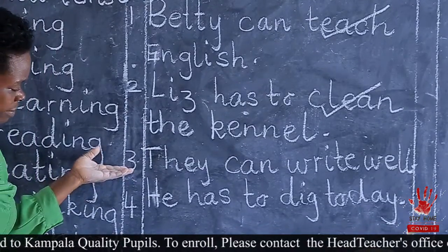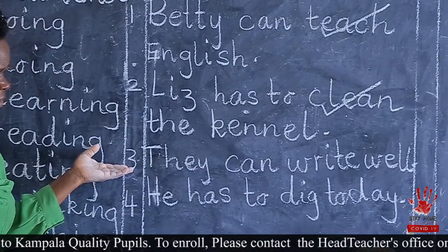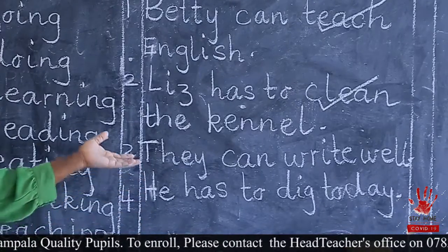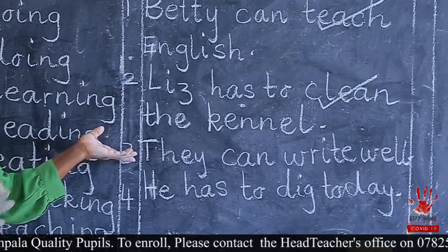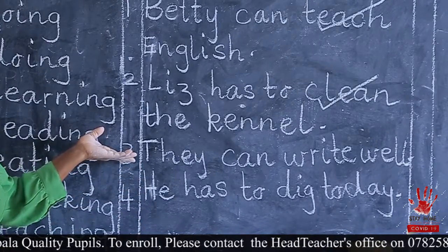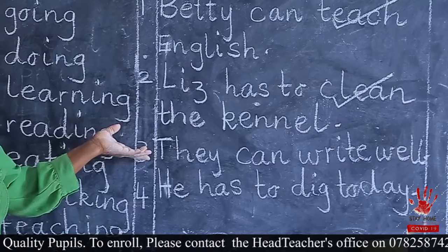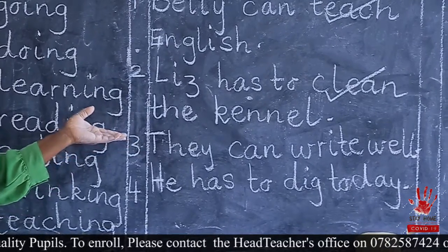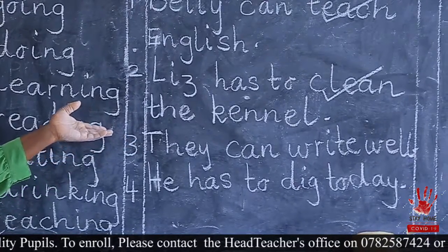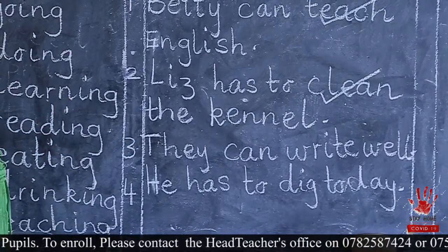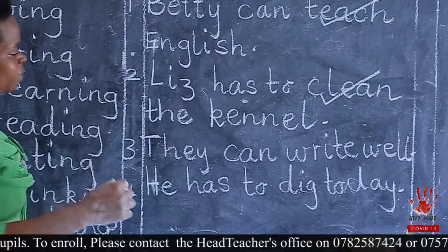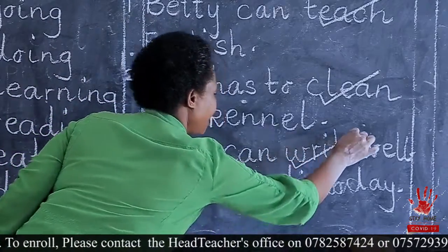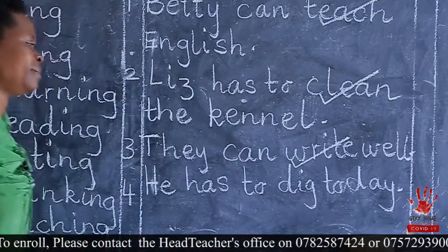We come to number three. They can write. Which one is an action in that sentence? Someone has said write. Thank you so much. You come and give it a tip. A smart one.